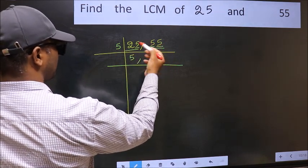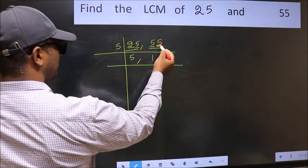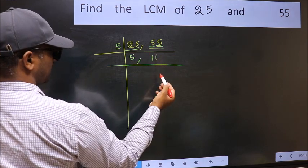First number 5, when do we get 5 in the 5 table? 5 times 1 is 5. The other number 5, when do we get 5 in the 5 table? 5 times 1 is 5.